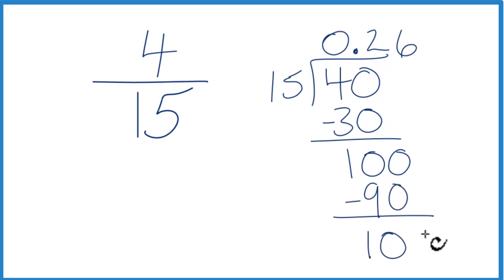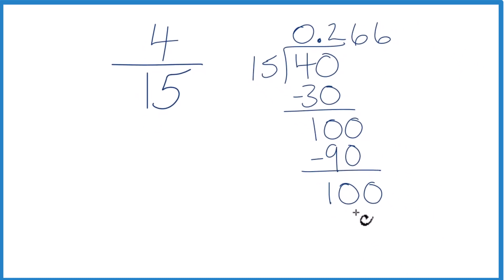And we're going to make it 100, move over 1. 6 times 15, that's 90. We subtract, we get 10, call it 100. And you can see, we're going to just keep getting 6 here. 6 is going to repeat in this fraction.